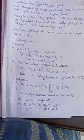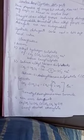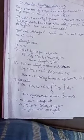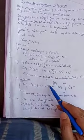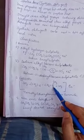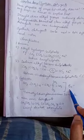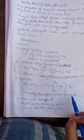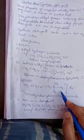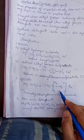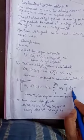Cationic detergents are quaternary ammonium salts of amines with acetates, chlorides, or bromides as anions. Here you can see an example of a cationic detergent — it is a quaternary ammonium salt which has a bromide ion as the anion, consistent with the definition.